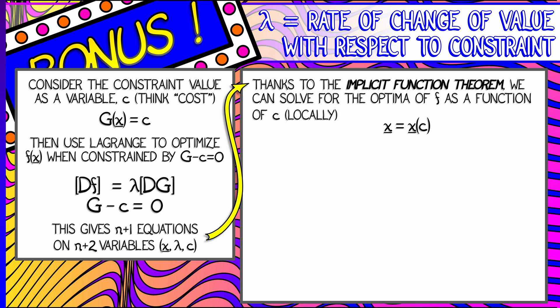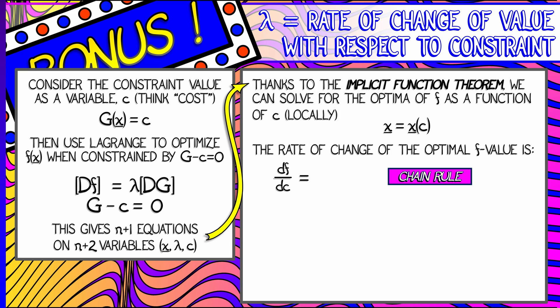That is, I'm going to write x as a function of c. You change the constraint curve, you change the optima. So what we want to investigate is the rate of change of the optimal f value. So what do we do? We plug those x variables that depend on c into f, and we take the derivative of f with respect to c.